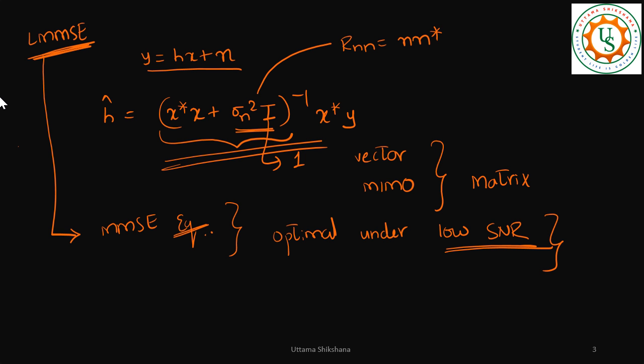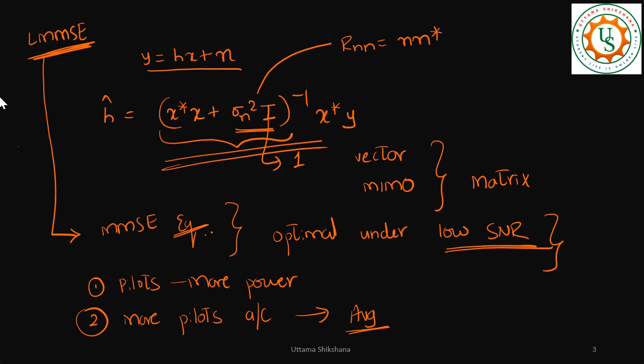Yes, we do have low SNR situations. But 3GPP has already provided certain options to boost up the SNR. One option is to transmit the pilots with more power. The second option: if you see that your SNR is bad — meaning too much noise — you can transmit more pilots across multiple symbols and perform averaging across symbols. This will also boost your SNR. There are already options to boost up your SNR, so we can expect very good SNR in most scenarios.